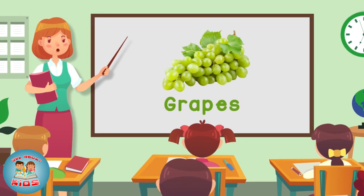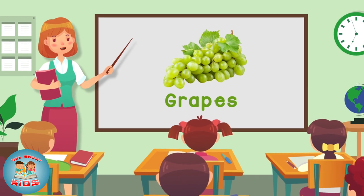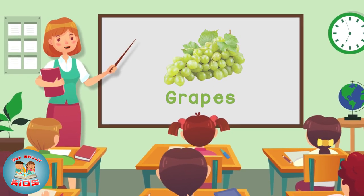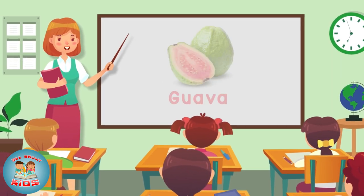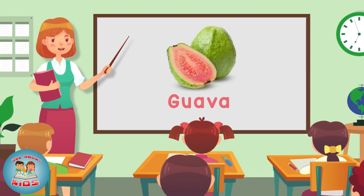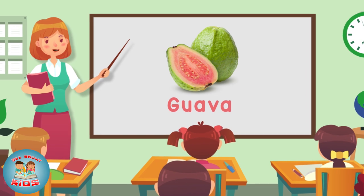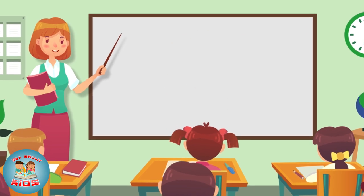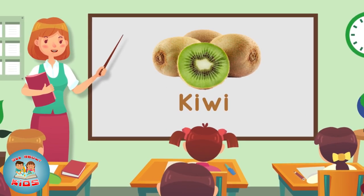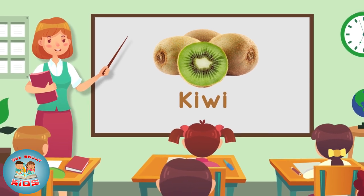Crabs — this is a bunch of crab. Gawa — this is a gawa. Kiwi — this is a kiwi.